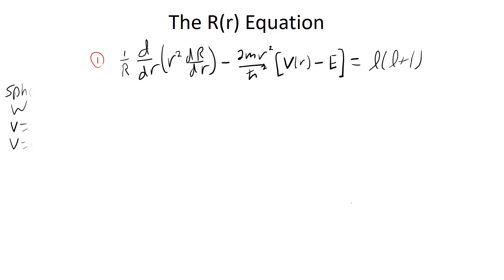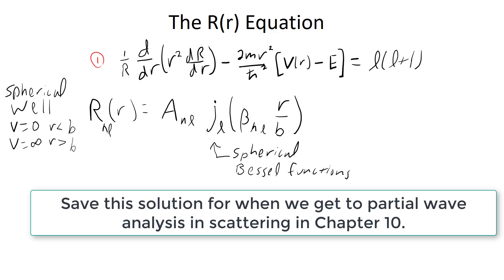Using that assumption, Griffiths works out two examples in chapter 4. In section 4.1, he works out the spherical potential well, where the potential energy equals zero for a radius less than a certain amount, b, and it's otherwise infinite. And given that potential energy, the solutions are spherical Bessel functions, J sub l.